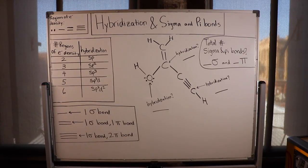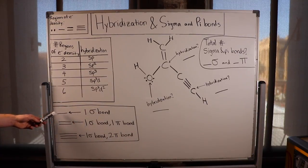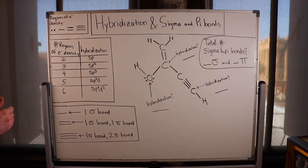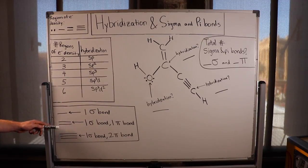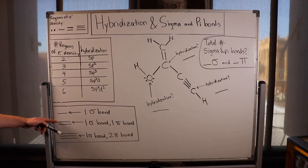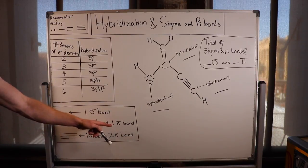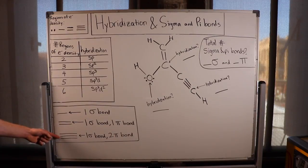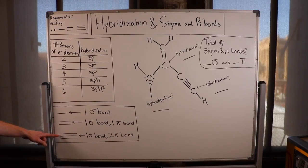A sigma bond is simply a single bond between two atoms, and a pi bond is a second or third bond between two atoms. In a double bond, the first single bond is the sigma bond, and the second bond is the pi bond. In a triple bond, the first bond is the sigma bond, the second bond is the first pi bond, and the third bond is the second pi bond.